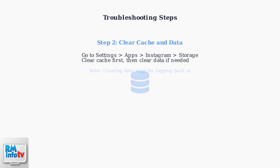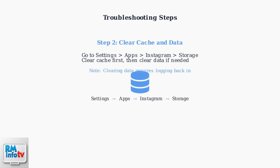If updating doesn't work, try clearing Instagram's cache and data. Navigate to your phone's settings, find Instagram in your apps list, and access the storage options. Clear cache first, and if the problem persists, clear data. Remember that clearing data will require you to log back into Instagram.